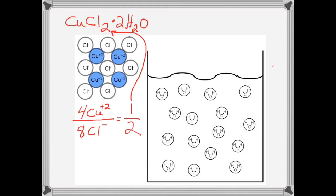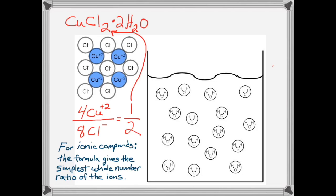If copper chloride was a covalent compound, the formula would represent the constituents of a molecule, one copper and two chlorides. But in this case, we have an ionic compound. And it's important to note that ionic compounds form crystals. And the formula gives the simplest whole number ratio of the ions, not how many would be in one particular particle.